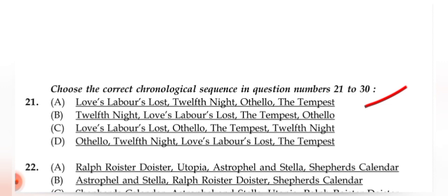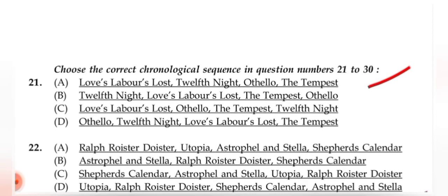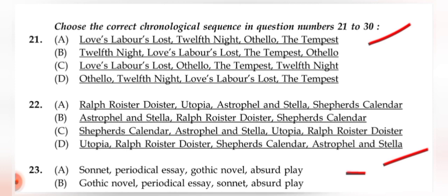Questions 21–30 ask for the correct chronological sequence. Question 21: The correct answer is (A): 'Love's Labour's Lost,' 'Twelfth Night,' 'Othello,' 'The Tempest.' Please continue verifying the remaining chronological sequence questions in the upcoming discussion.